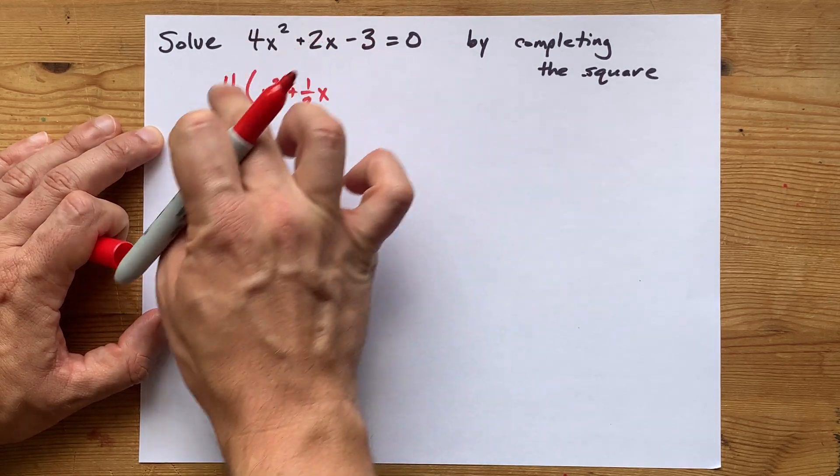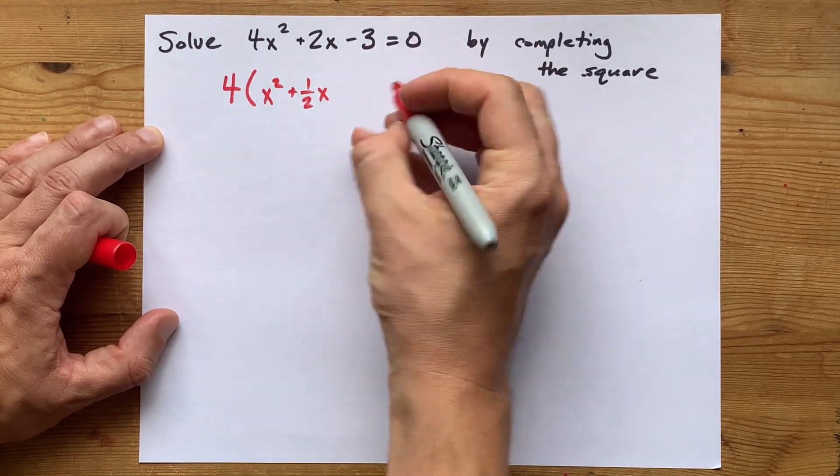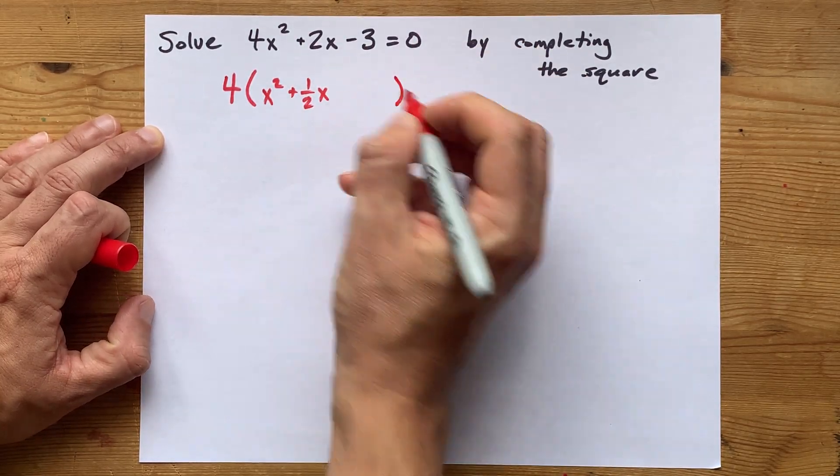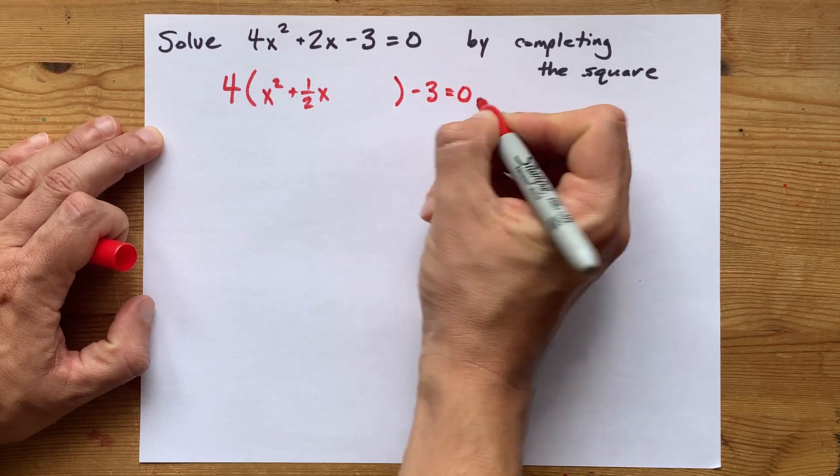So I factored four out of the first two terms. Four divided by four is one. Two divided by four is a half. I'm actually going to give myself some extra room there and write the minus three equals zero.